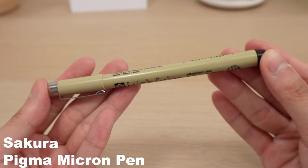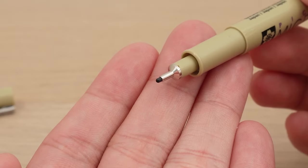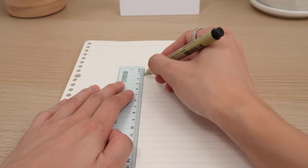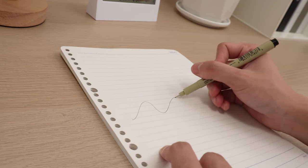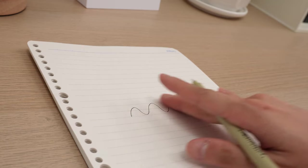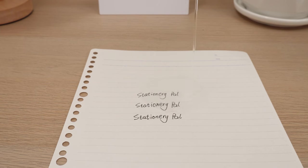Now, the Sakura Pigma Micron Pen, a fine-tipped gem for drawing and writing. It creates precise lines, offers a natural feel, and its smooth ink dries fast without smudging or bleeding through paper. Plus, it's waterproof and fade-resistant, making it perfect for preserving your work.